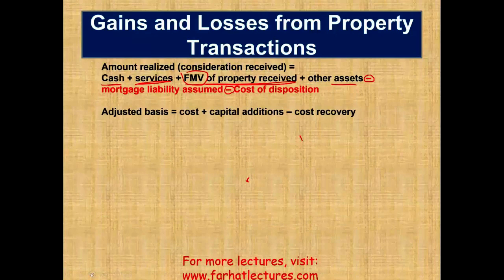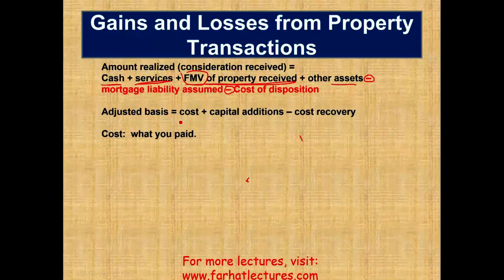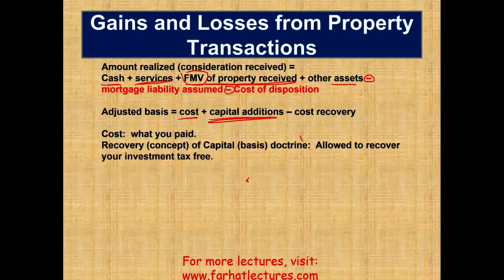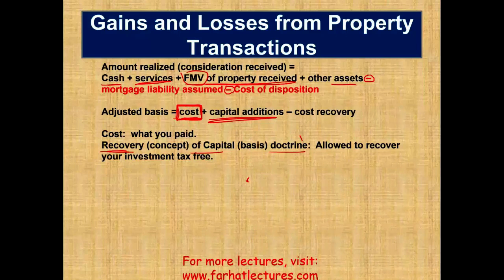Now, adjusted basis. We take the amount realized and deduct the adjusted basis. The adjusted basis is what you actually invested — how much you paid for that asset. Cost is usually the largest component. Your cost is basically a recovery of capital doctrine — you are allowed to recover your investment tax-free. So when you sell something, you don't pay taxes on your cost, because you are recovering what you paid. For example, if you deposit $1,000 in a savings account and withdraw $1,000, you don't get taxed.